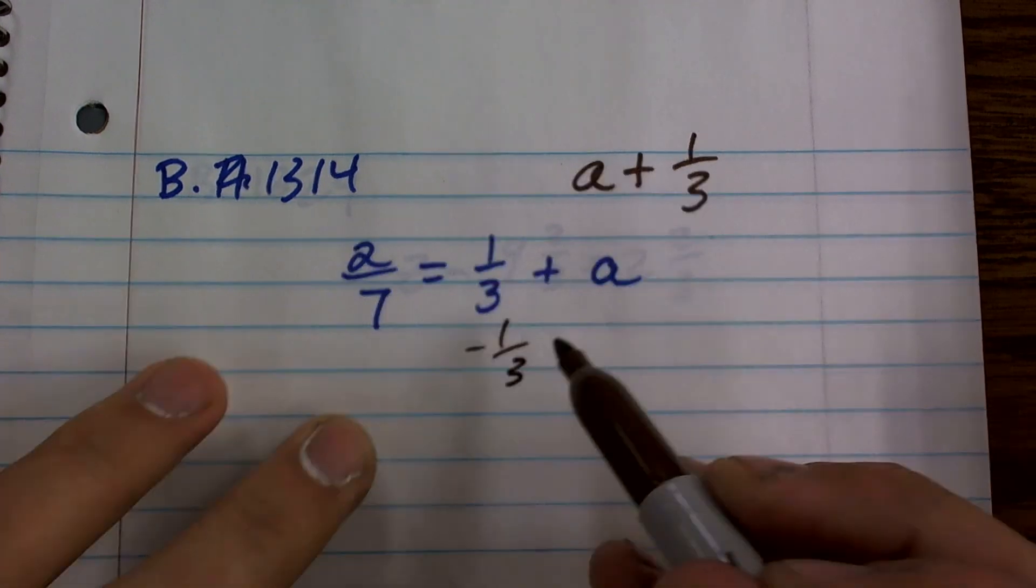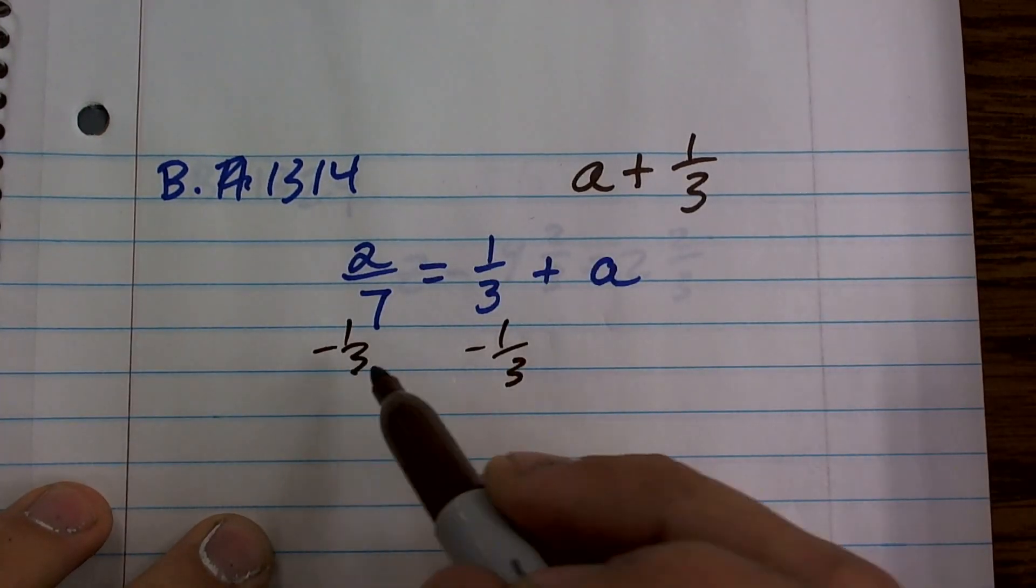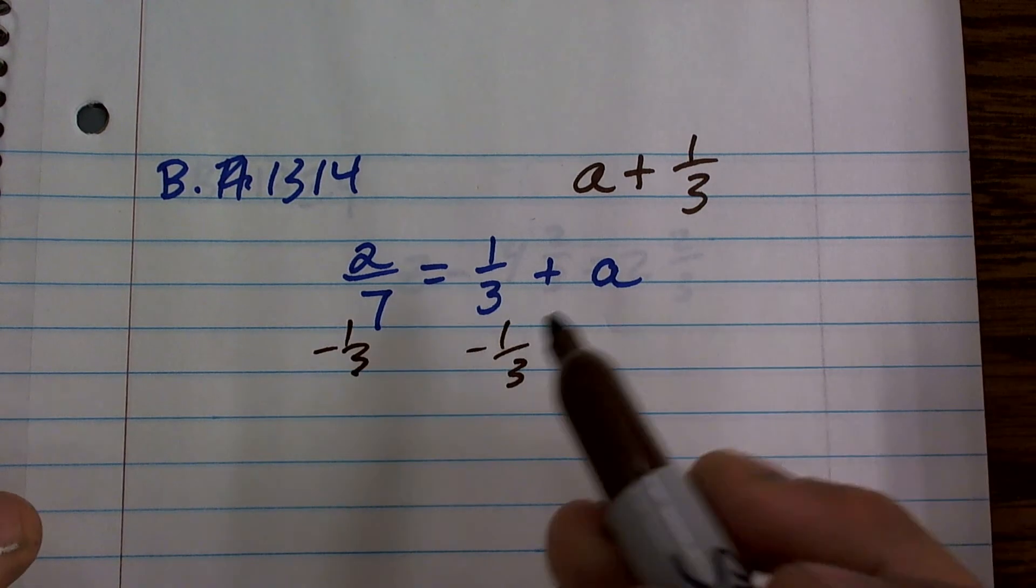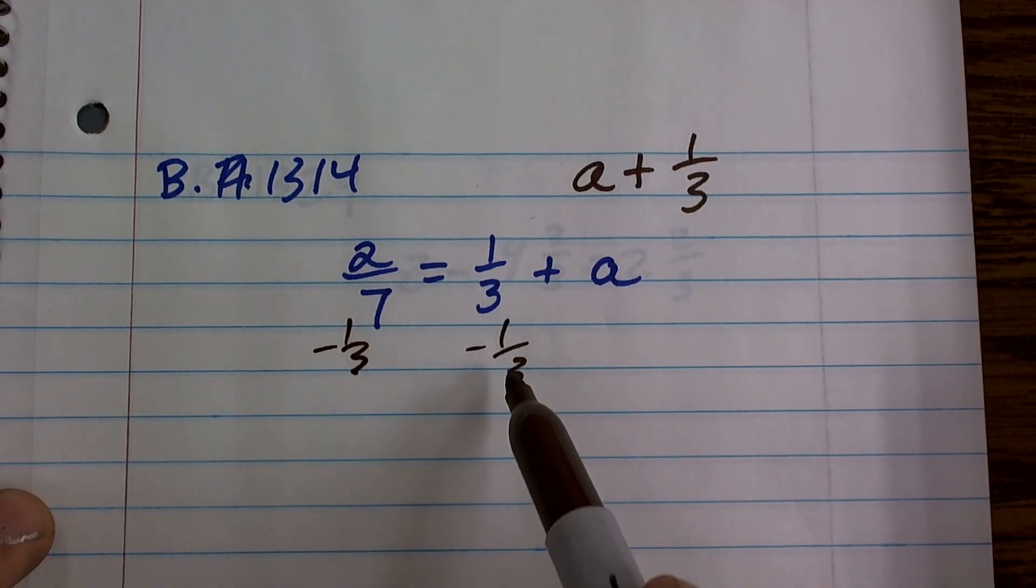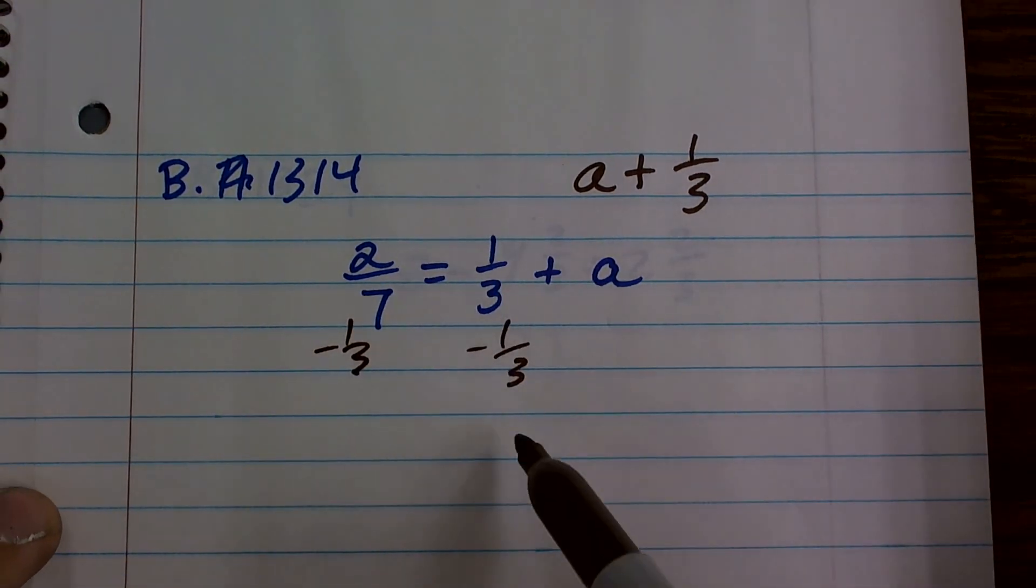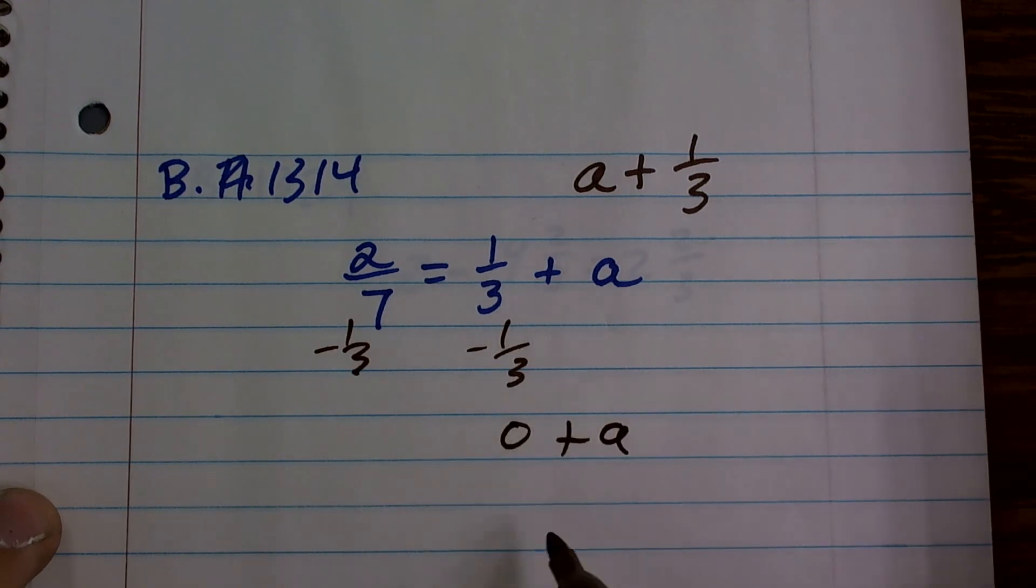So what I'm going to do is subtract 1/3 from both sides. Now, we know that 1/3 minus 1/3 equals 0 plus a, which equals a. So now, I've isolated my variable.